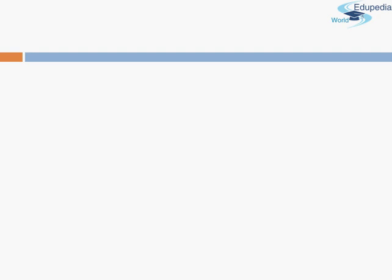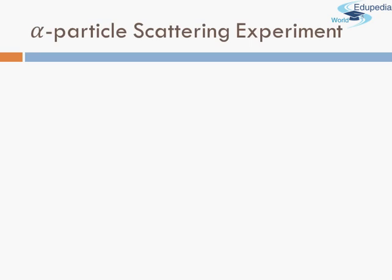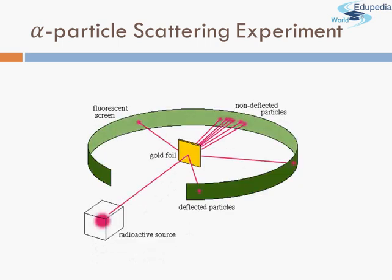The experiment conducted by Rutherford was called the Alpha Particle Scattering Experiment. We'll see why in a minute. The experimental setup of Rutherford looked something like this. This is just a rudimentary diagram — it's not the exact replica of the experiment carried out by Rutherford, but it is here just for our understanding.